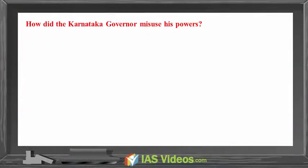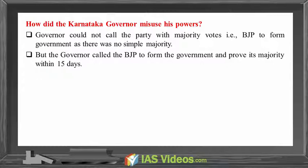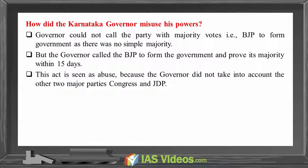How did the Karnataka governor misuse his powers? The governor could not call the party with majority votes — that is, the BJP — to form the government, as there was no simple majority. But the governor called the BJP to form the government and prove its majority within 15 days. This act is seen as an abuse because the governor did not take into account the other two major parties, Congress and JD(S).